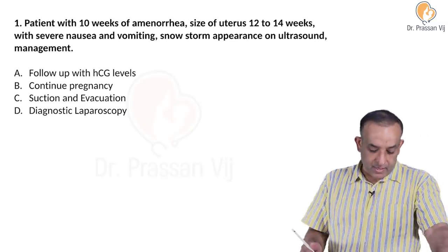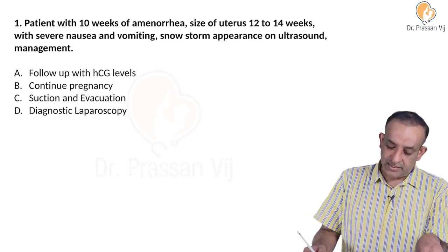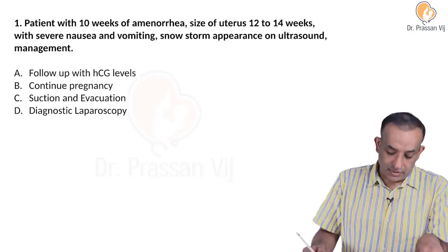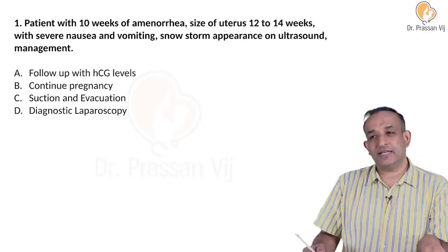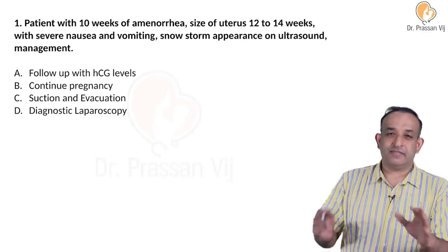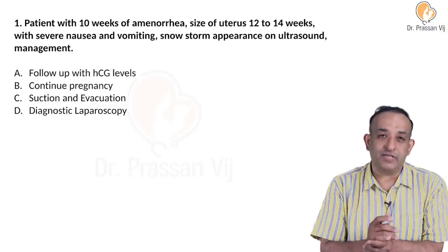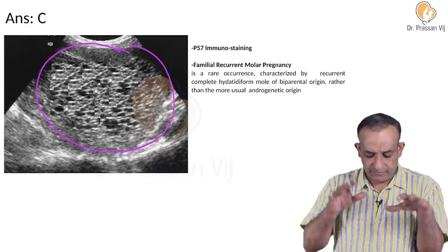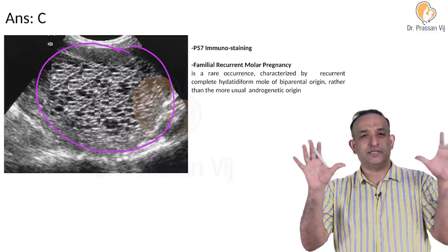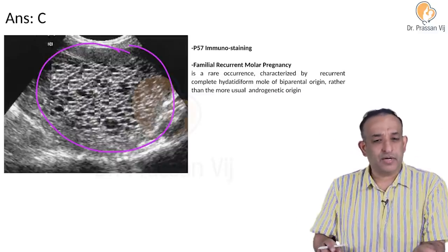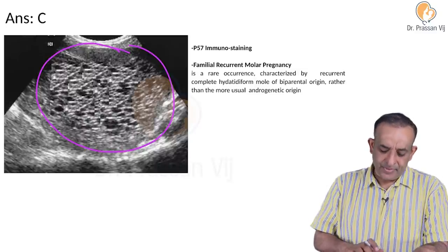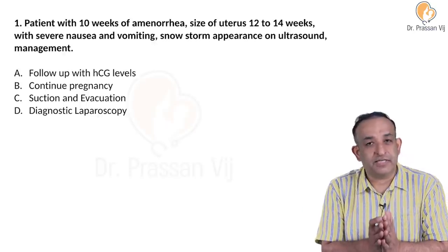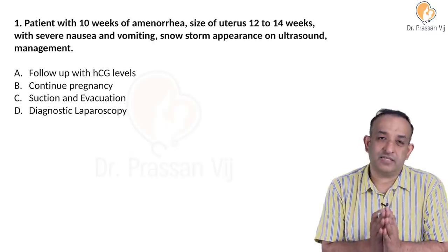We will start with the first question. A patient with 10 weeks of amenorrhea, uterine size of around 12 to 14 weeks, came with severe nausea and vomiting, snowstorm appearance on the ultrasound. What is the management? When they give you this option of a snowstorm appearance on the ultrasound, that is the simplest question in obs and gyne they can ask you.